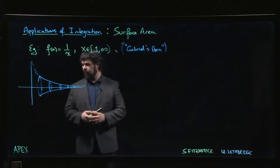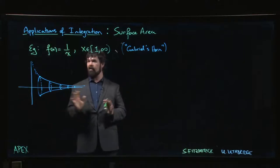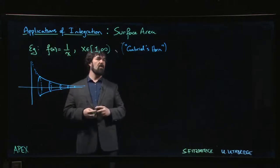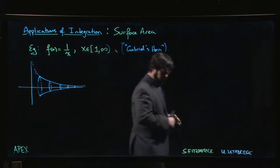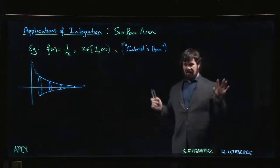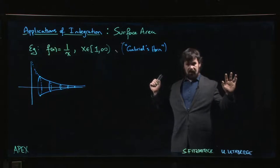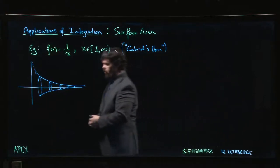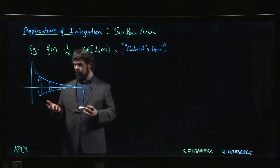Alright, so this last example is a sort of classic mathematical paradox known as Gabriel's Horn. Gabriel's Horn is named after the angel Gabriel because there's something unearthly about this problem if you take a look at it.